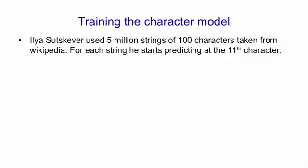Ilya Sutskever used 5 million strings of 100 characters each, taken from English Wikipedia. For each string, he starts predicting after 11 characters.